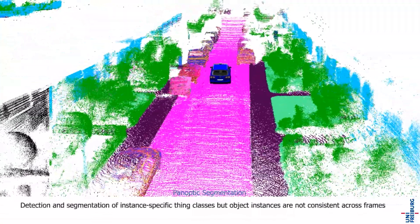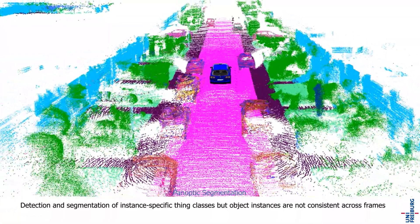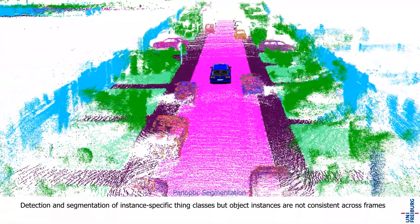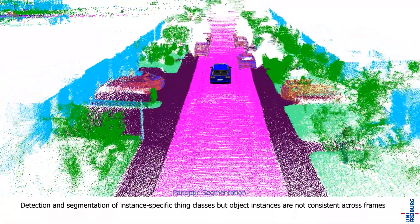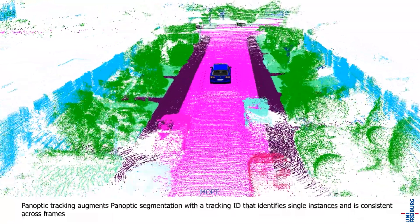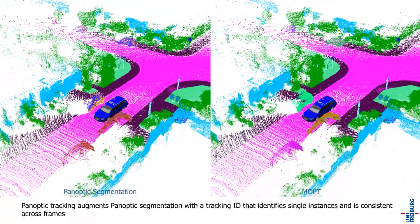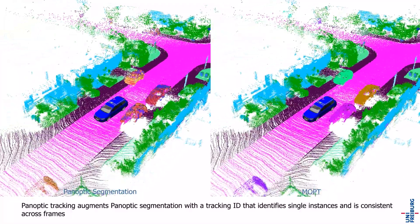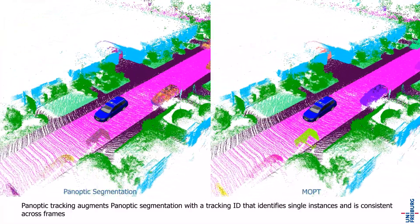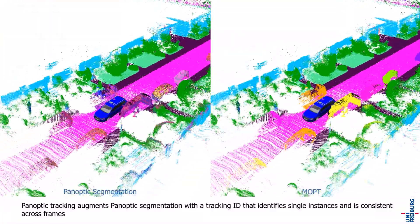Panoptic Segmentation performs detection and segmentation of instance-specific thing classes, but object instances are not consistent across frames. Multi-Object Panoptic Tracking augments Panoptic Segmentation with a tracking ID that identifies individual instances and is consistent across frames.